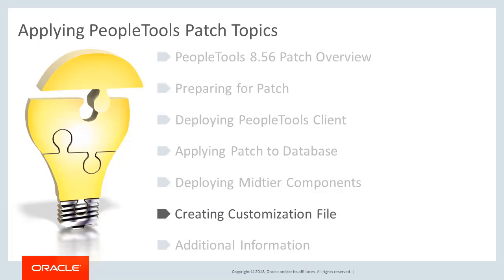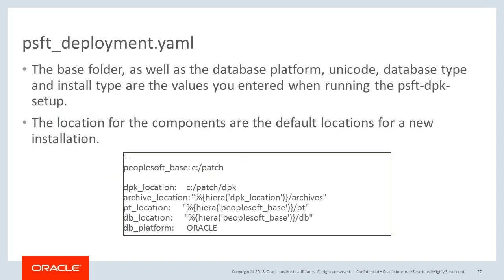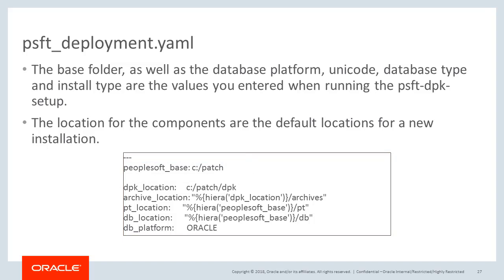You will need to create a customization file to indicate your PS app home and the location of any existing components. The setup script updated the YAML files in the base directory dpk/puppet/production/data. The psft-deployment.yaml file provides options for deployment components such as installation locations for Oracle Tuxedo and the Oracle database client. The psft-configuration.yaml file lists the attributes pertinent to the PeopleSoft domains. The psft-deployment.yaml file contains the base folder, database platform, Unicode, database type, and install type.